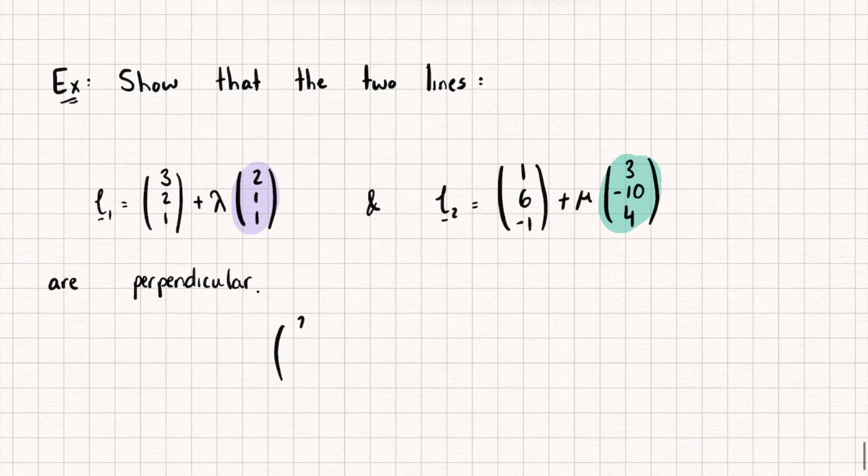therefore the lines are perpendicular as the direction vectors are perpendicular. So let's calculate this. So we've got 2, 1, 1 dot 3, negative 10, 4. And this is going to give us 6 minus 10 plus 4, which does indeed equal 0. Therefore, these two lines are perpendicular.